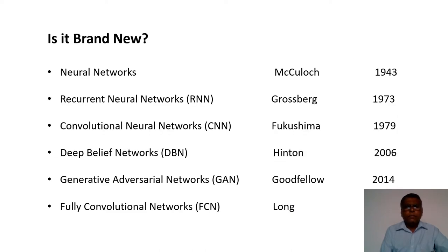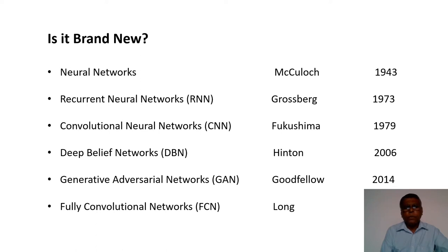Neural networks have a long history. The major types include recurrent neural networks, convolutional neural networks widely used in computer vision, deep belief networks, generative adversarial networks — invented by Goodfellow — which can generate realistic images, and fully convolutional neural networks used for segmentation.